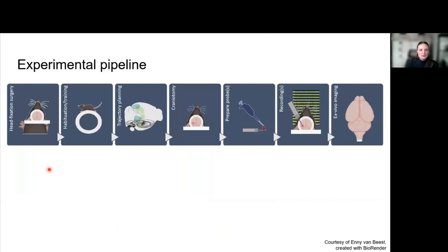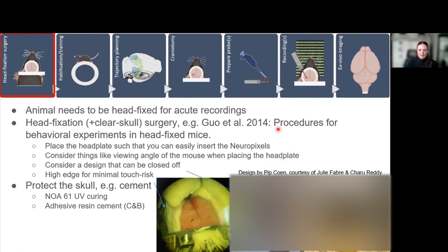I'm going to go through the experimental pipeline that I'm using in the lab step by step. Many of these things have been discussed in previous UCL Neuropixels courses, so feel free to look at these older presentations. They're all online. First, you want to head-fix the mouse, so you need to do a head-fix surgery, which means you're installing a head plate or a head bar on the skull of the mouse. We usually combine this with a clear skull surgery as well, so we put UV cement on the skull so that we can keep it visible throughout the entire time we're training and doing recordings. We like to use UV curing cement because it's easy to peel off once you start doing your craniotomy, whereas the adhesive resin cement is more sticky and harder to peel off.